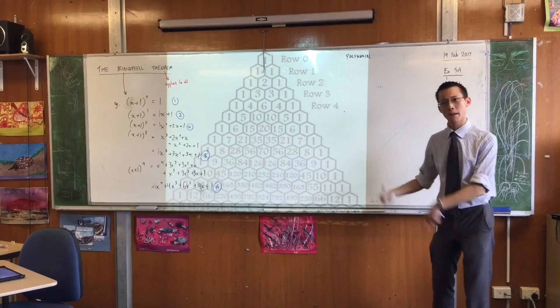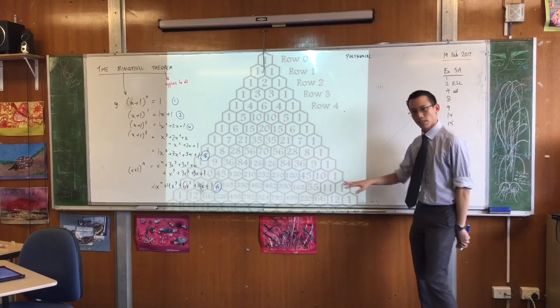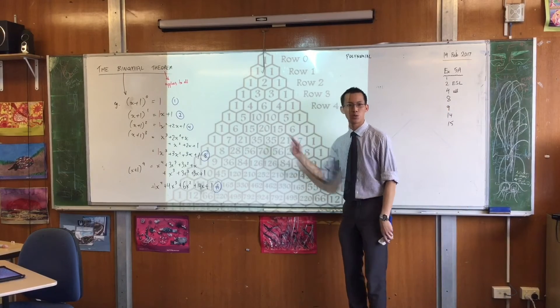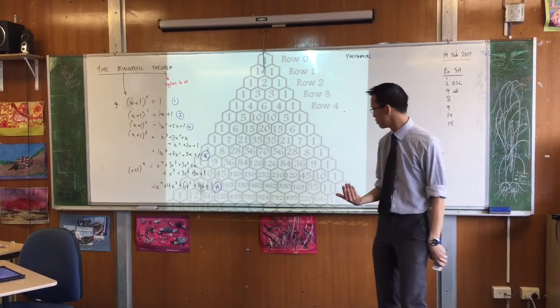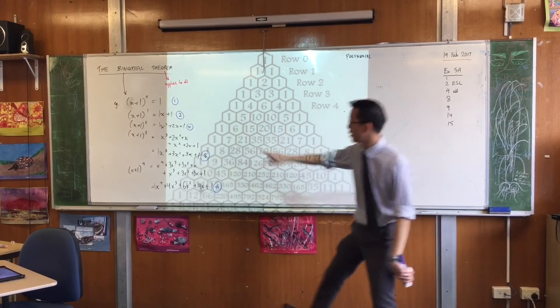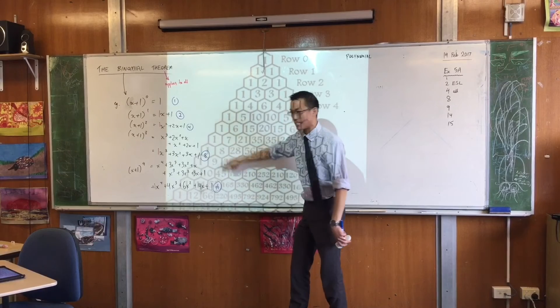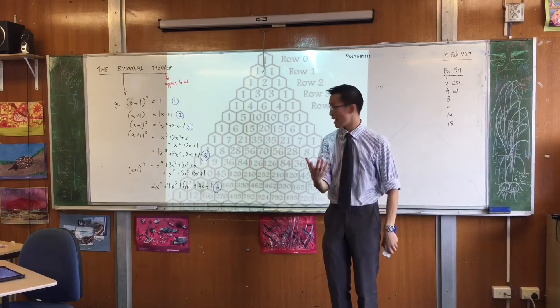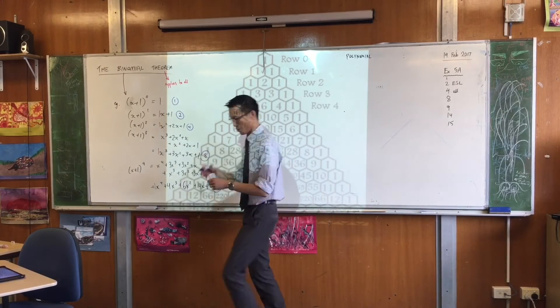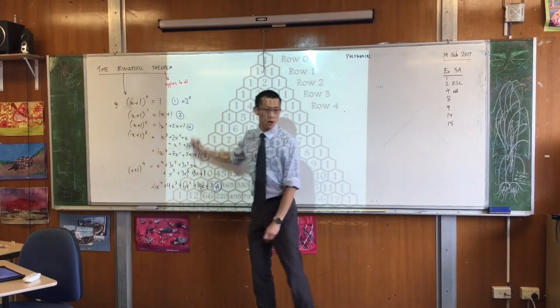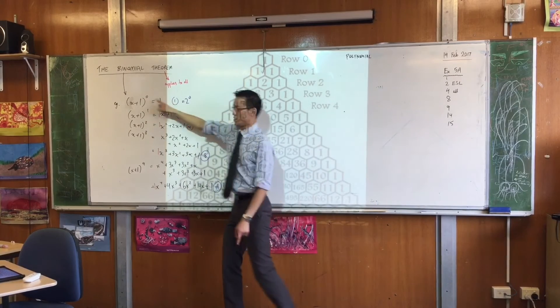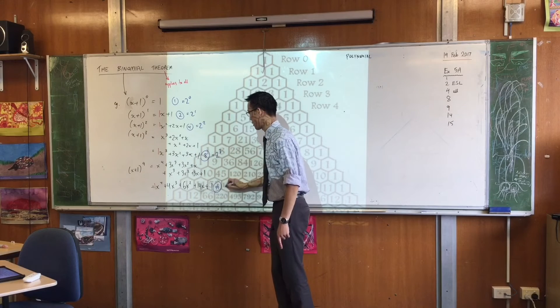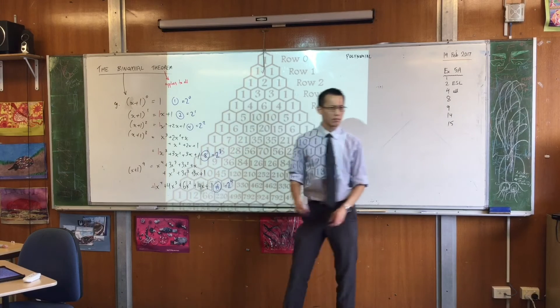Now, you're going to make your own Pascal's triangle in a minute. But I just want to point out, this is weird. I've already just noticed that every row of Pascal's triangle adds up to... 1, 2, 4, 8, 16. They're not just multiples of 2, they're powers of 2. Do you notice that? Because this is 2 to the 0. This is 2 to the 1, this is 2 squared, and you get the idea. That's weird.